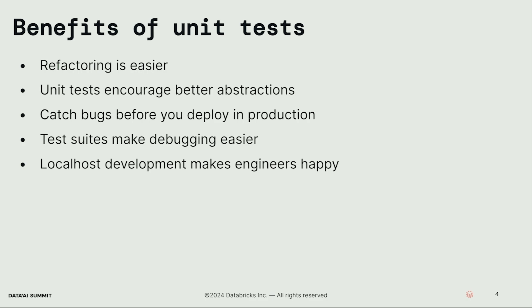So, why do we want to unit test our code? When we unit test our code, refactoring is easier. If we have 100% test coverage, in theory, when we refactor our code and the tests are still passing, we should be good to go on a production deploy. Unit tests encourage better abstractions — code that's easily wrapped in nice functions is easy to unit test, which encourages you to make better abstractions. By unit testing your code, you can catch bugs before production deploys, as unit tests encourage you to look at edge cases before you make production deploys.